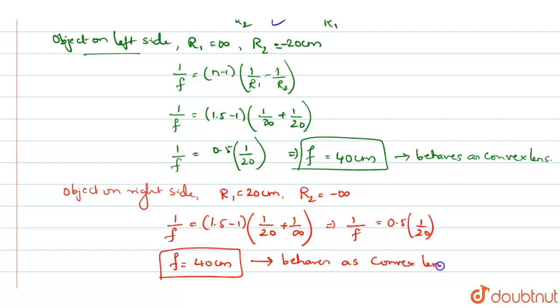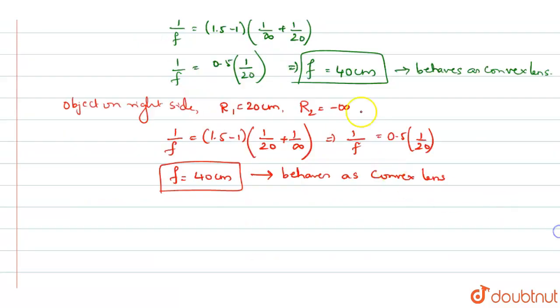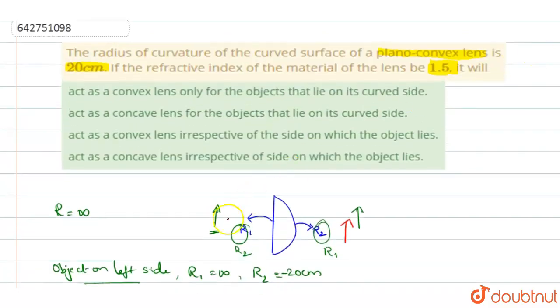When the lens behaves as a convex lens from both sides, the focal length is 40 cm irrespective of position. Whether you keep the object on the left or right side, it behaves as a convex lens. Therefore, option 3 is correct: it acts as a convex lens irrespective of the side on which the object lies.